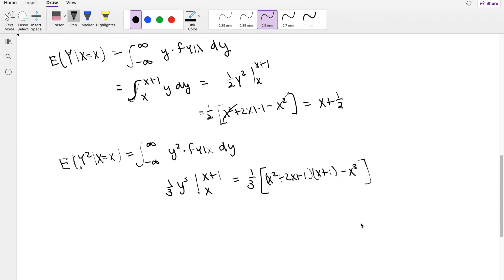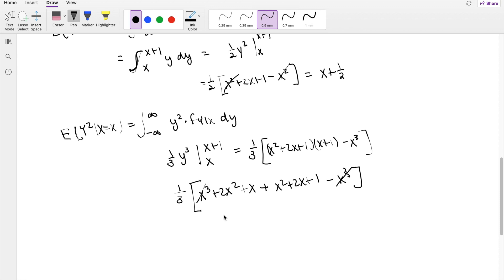So then I have to actually physically multiply this thing out, so that's going to be X³ plus 2X² plus X plus X² plus 2X plus 1 minus X³. The X³'s actually cancel out, so you get left with one third. Putting the X's together, you get 3X² plus 3X plus 1.